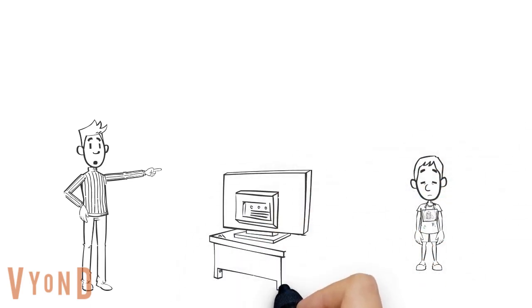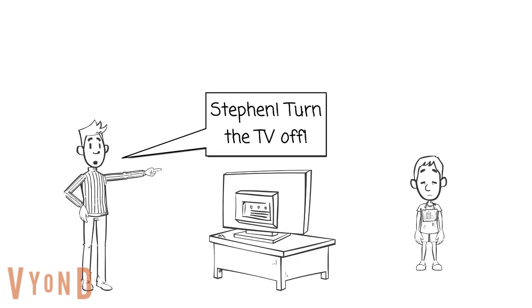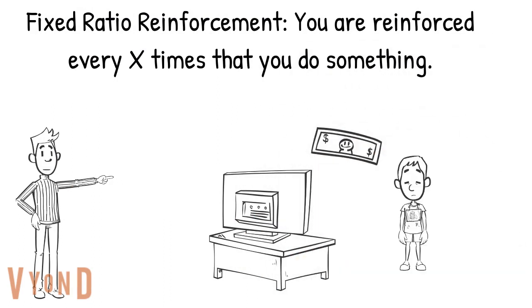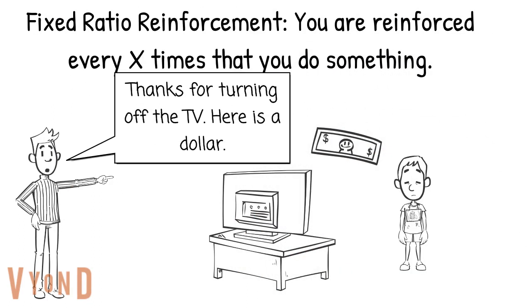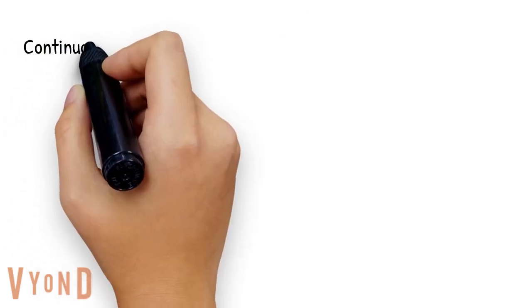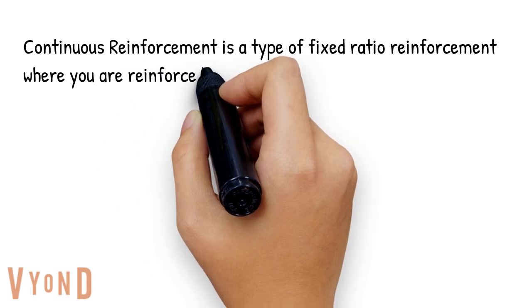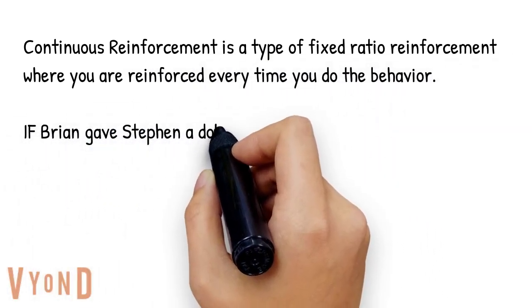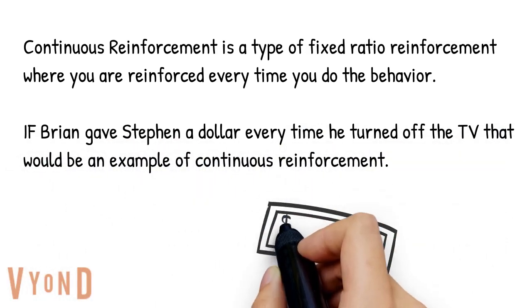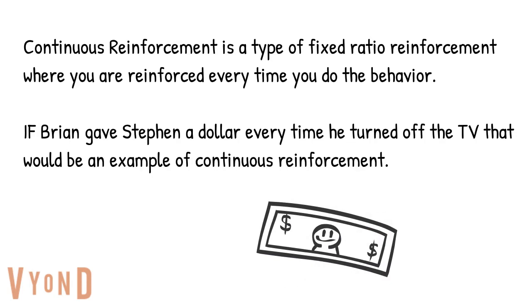Steven has an issue with leaving the TV on, and so Steven's dad Brian wants to reinforce Steven to turn the TV off after he's done using it. Fixed ratio reinforcement is when you're reinforced after a certain number of times you do the behavior. For example, Brian could give Steven one dollar every time he turns off the TV, or every three times, or every five times. Continuous reinforcement is a type of fixed ratio reinforcement where you are reinforced every single time you do the behavior — so if Brian gives Steven a dollar every time he turns off the TV, that would be continuous reinforcement.